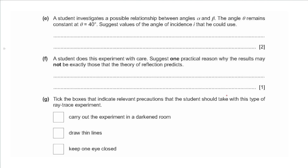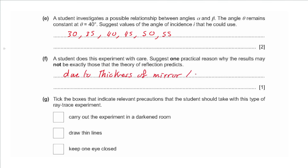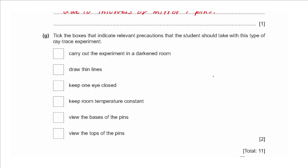Part e: a student investigates the relationship between angles alpha and beta with angle theta fixed at 40°. Suggested values of angle of incidence i to use are: 30°, 35°, 40°, 45°, 50°, and 55° — giving five or more readings. Part f asks for a practical reason why results may not exactly match theory: the thickness of the mirror or the thickness of the pins used.